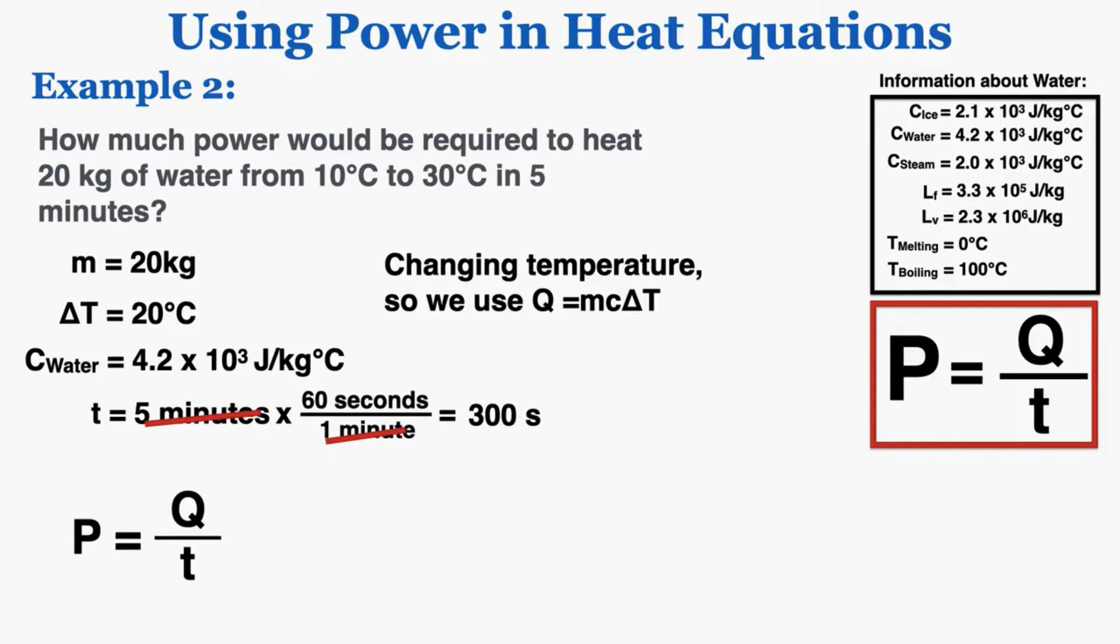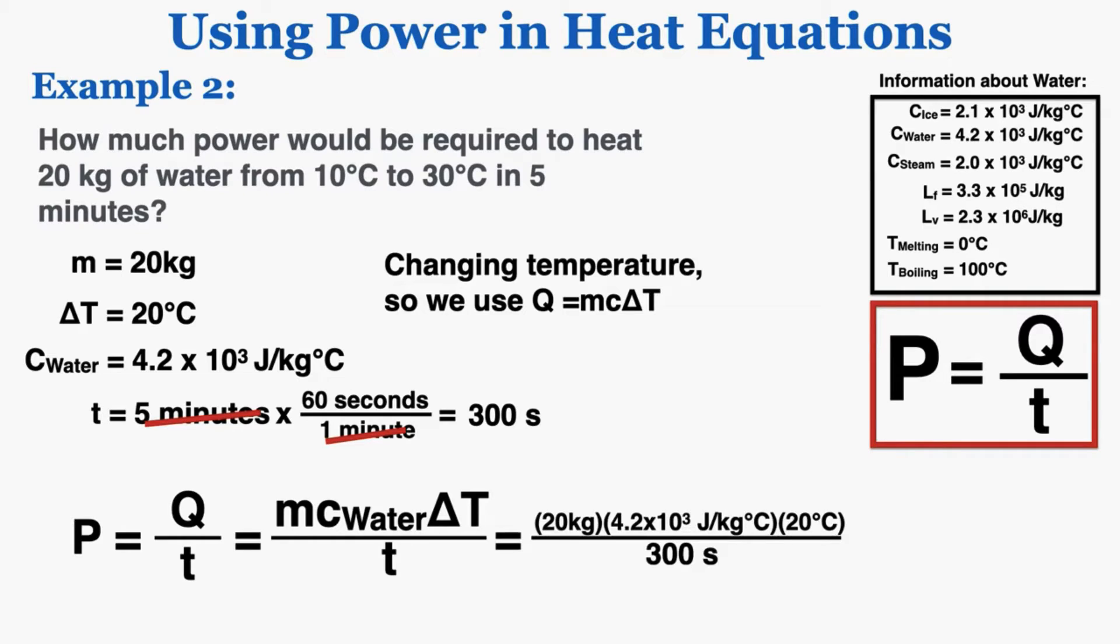So the power is equal to the heat over the time. Replacing heat with MC delta T and plugging those numbers in gets me 5,600 watts of power to change the temperature of 20 kilograms of water by 20 degrees Celsius.